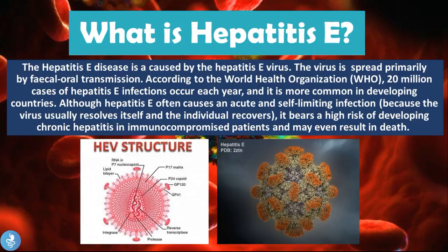Although hepatitis E often causes an acute and self-limiting infection — because the virus usually resolves itself and the individual recovers — it bears a high risk of developing chronic hepatitis in immunocompromised patients, and in this case may even result in death. Viral particles are present in an infected individual's feces, and when we come into contact with those feces we are able to get the disease.